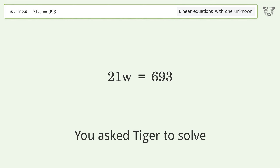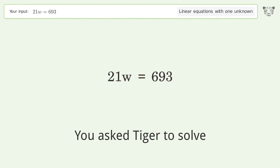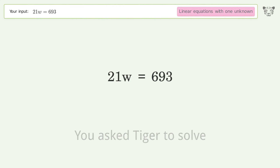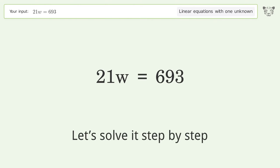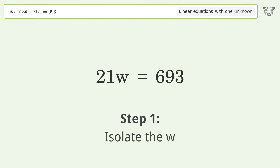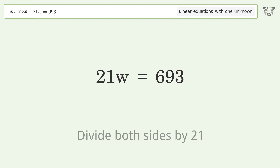Tiger is asked to solve a linear equation with one unknown. The final result is w equals 33. Let's solve it step by step: isolate the w by dividing both sides by 21.